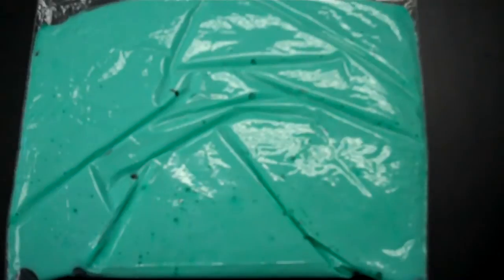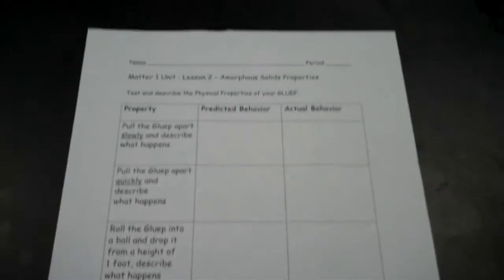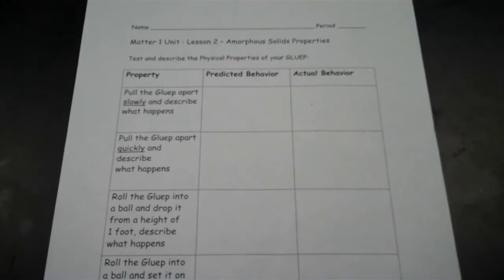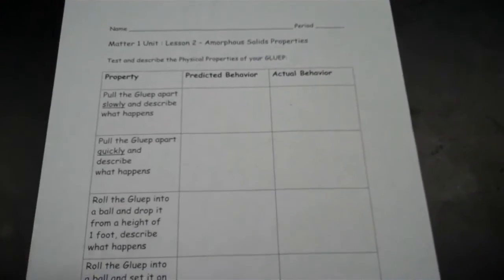All right, so it's day two of the Amorphous Solid Lab, and at your seat you will be given the data sheet that you'll need to turn in to get credit for having done the lab. The first thing we would like you to do is predict what you think the gloop is going to do when you test certain properties.